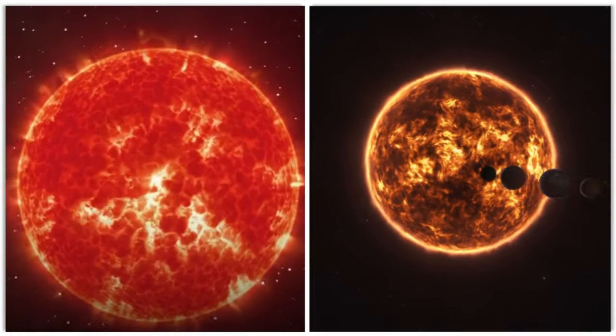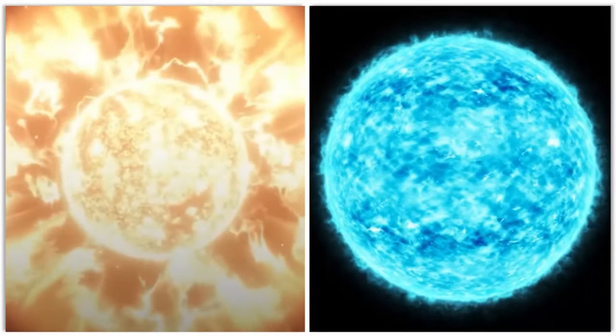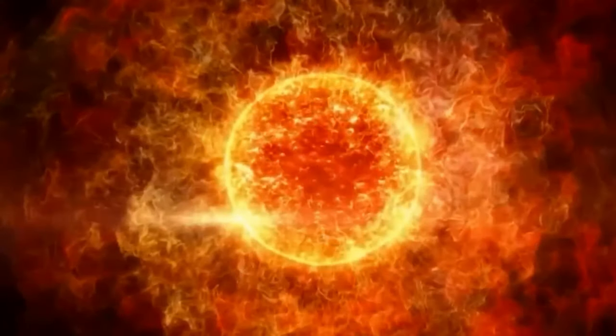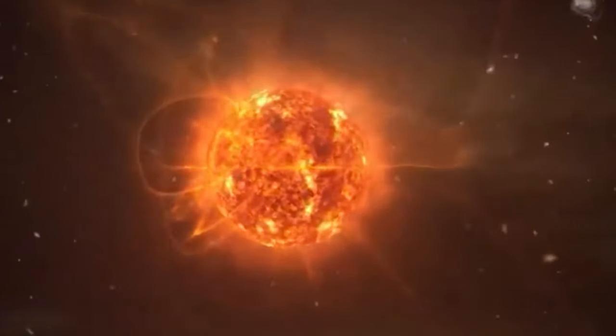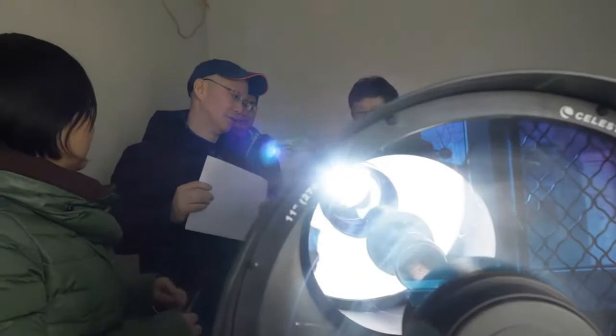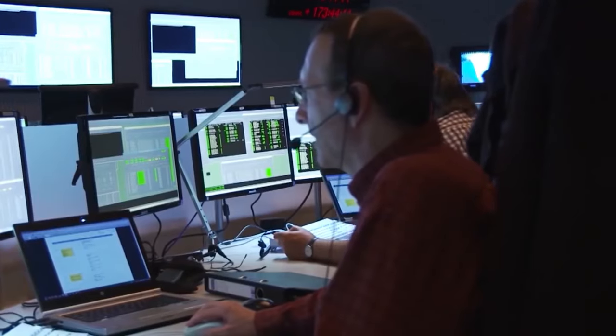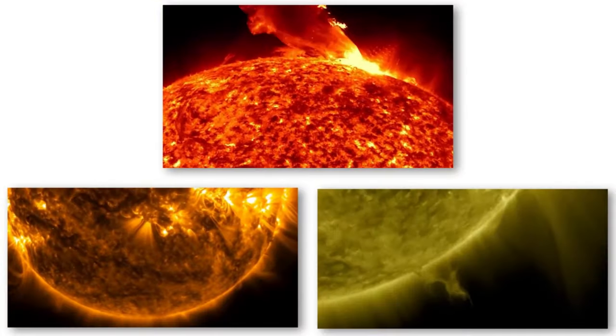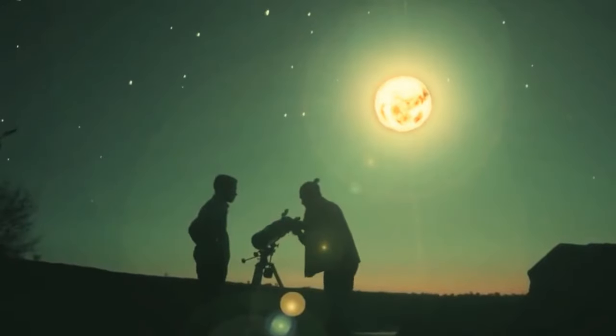While a Betelgeuse supernova isn't to significantly affect the climate, the radiation emanating from such an event could induce minor cooling on Earth. Investigating the potential climate ramifications of a Betelgeuse supernova empowers us to understand how cosmic occurrences like this influence the Earth's environment. Betelgeuse supernovae could also release neutrinos. The detection and analysis of these neutrinos provide information regarding the science that governs supernovae. Neutrinos serve as cosmic messengers, conveying essential data about the inner workings of these cataclysmic events. By decoding the neutrino signal, scientists embark on a journey to unravel the universe's deepest mysteries.